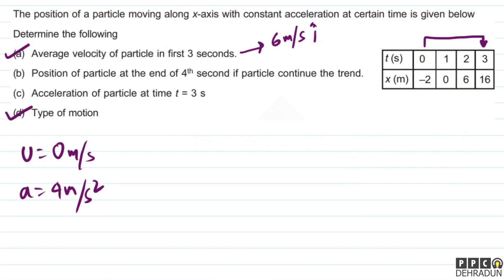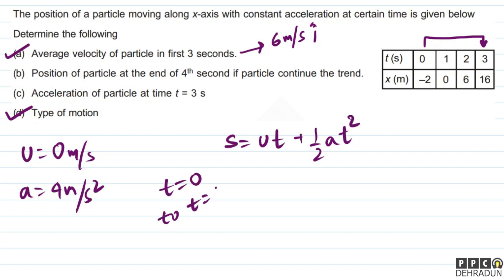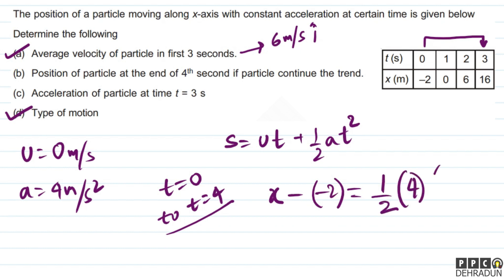For Part B, we need the position of the particle at the end of the fourth second, if the particle continues the trend. Using s = ut + ½at² from t=0 to t=4: displacement = x − (−2) = 0(4) + ½(4)(4²), since u = 0 and a = 4.